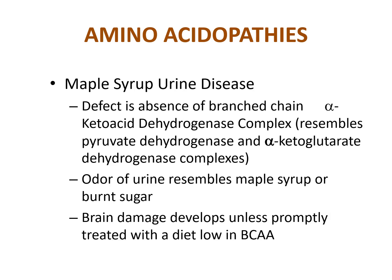Maple syrup urine disease (MSUD): the defect is absence of the branched-chain alpha-keto acid dehydrogenase complex. The odour of urine resembles maple syrup or burnt sugar, and brain damage develops unless promptly treated with a diet low in branched-chain amino acids.